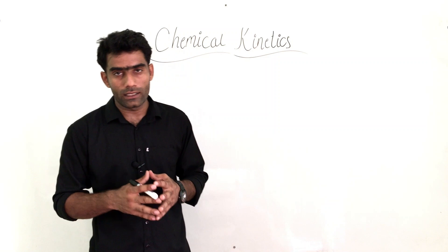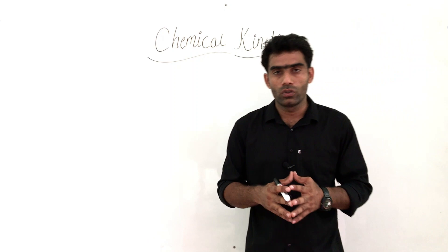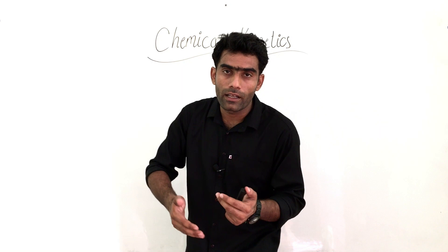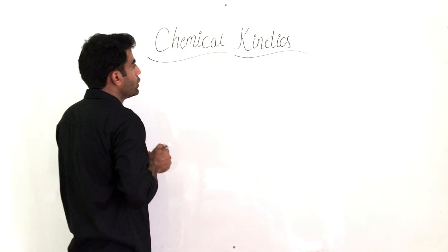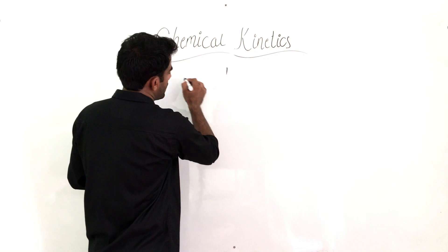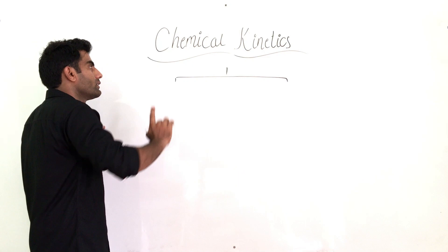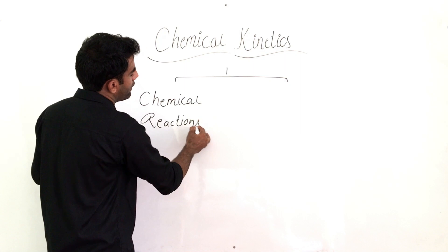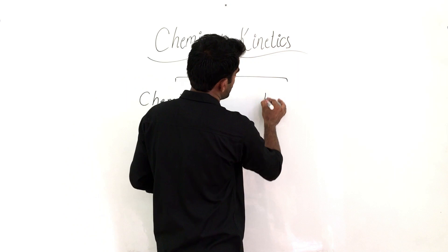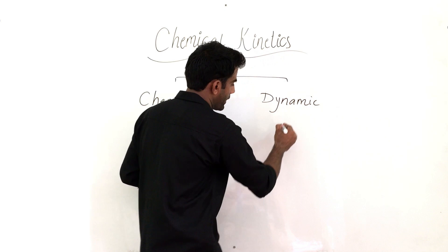Today we will talk about the introduction of chemical kinetics. This is an introductory class about chemical kinetics — what does this term mean? The term 'chemical kinetics' has two words: one is 'chemical' and another is 'kinetics'. The word chemical represents chemical reactions. The word kinetics means dynamic, and dynamic means motion, and motion here means speed.